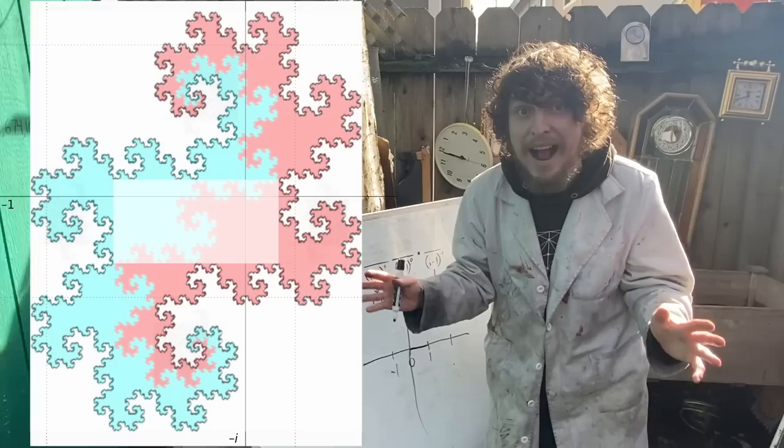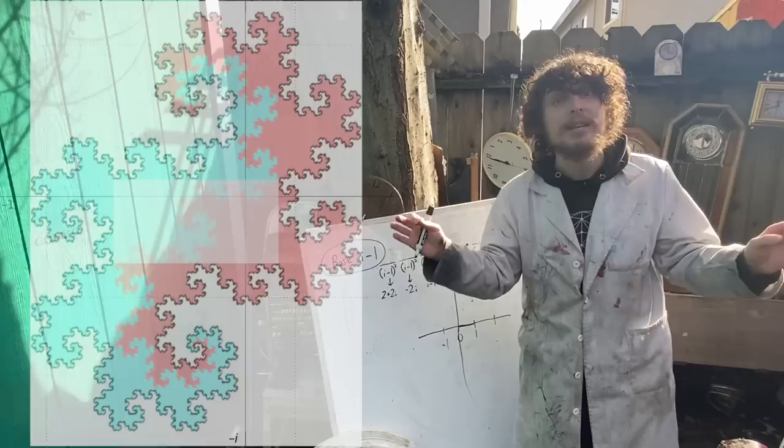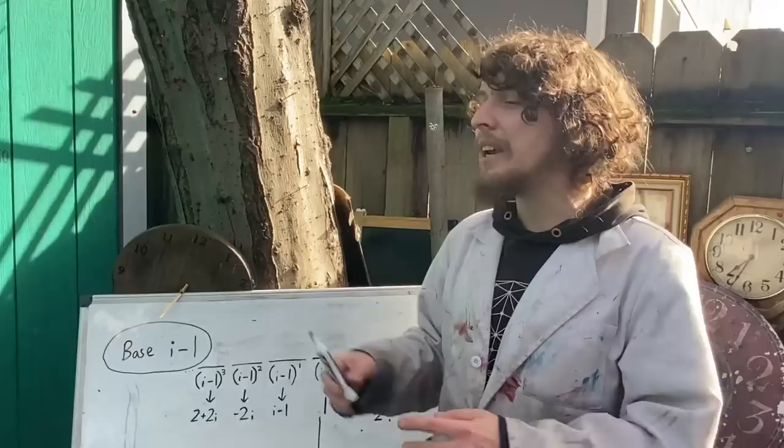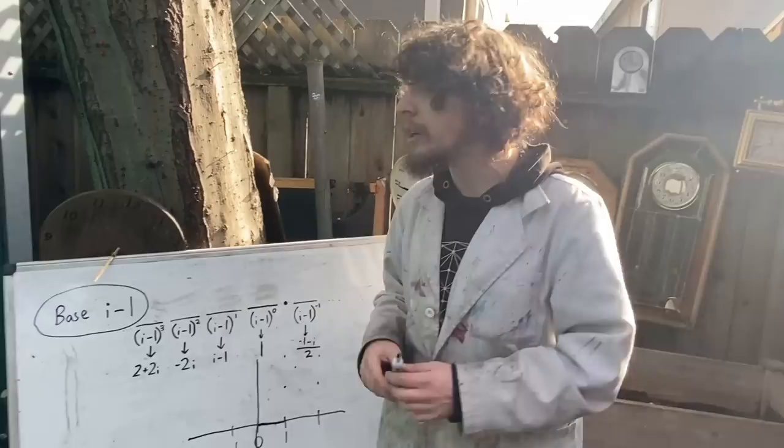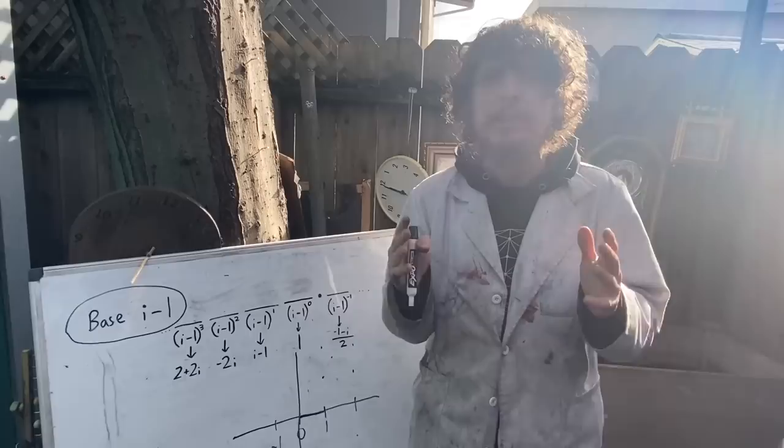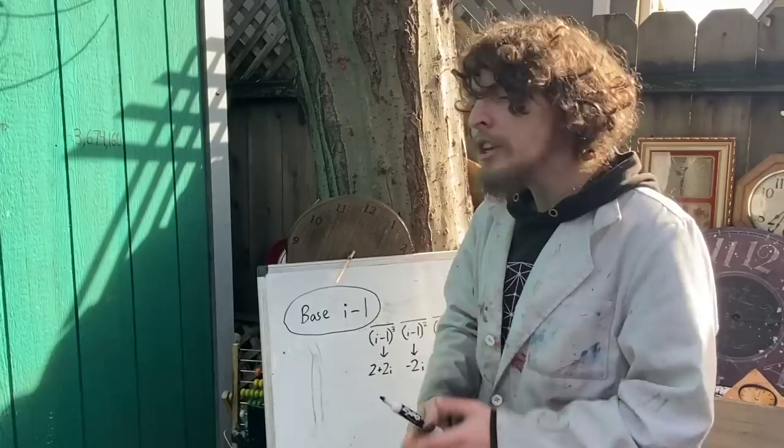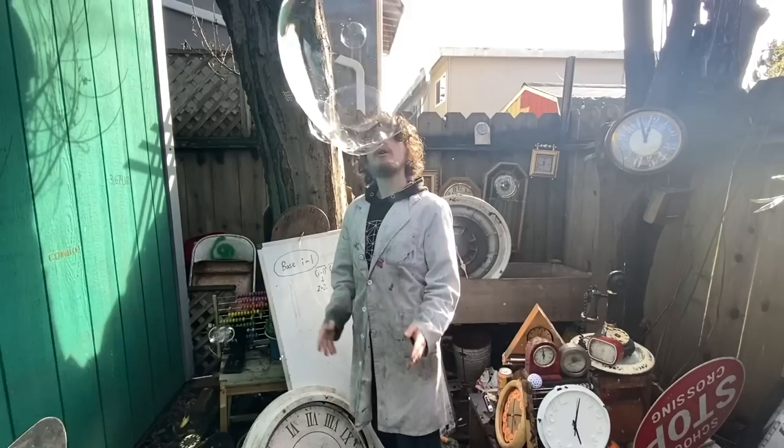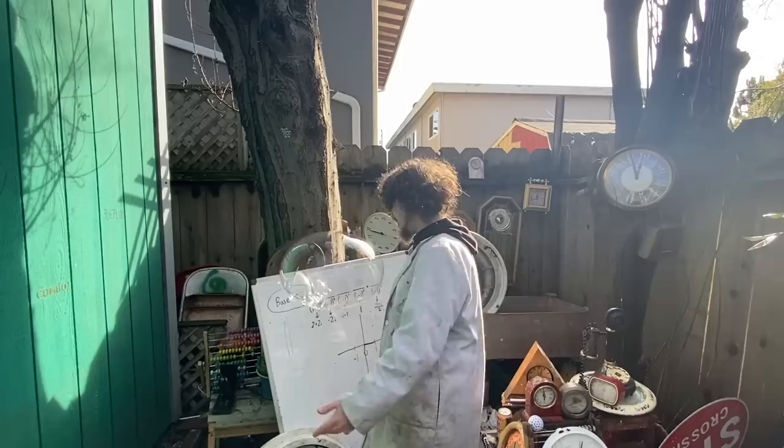Now these complex and imaginary bases may seem like they wouldn't have much of a use in our world now, but we're finding more and more places that imaginary and complex numbers do show up in ways that computers could be designed, in equations that might describe the universe and more. So I can imagine a future, not where humans would necessarily use a base i minus one or a base two i, but where computers might. We'll cover more strange ways that numbers could be counted in the future. For now, I hope you enjoyed learning about these strange bases here with me today.